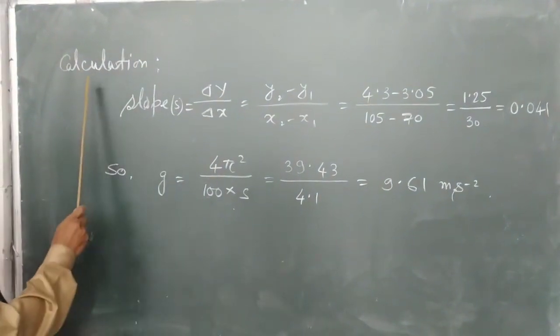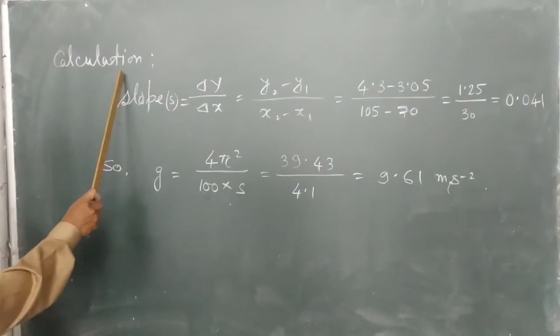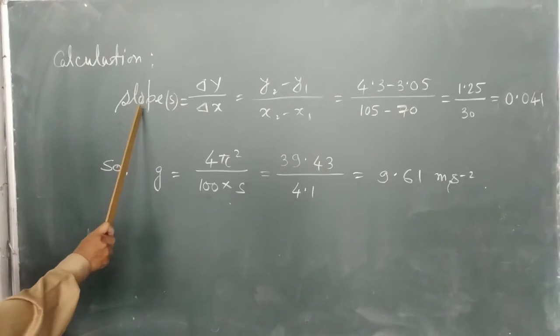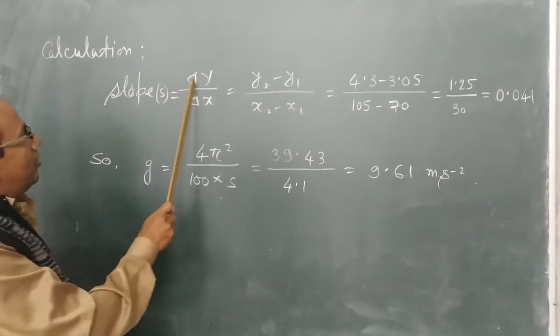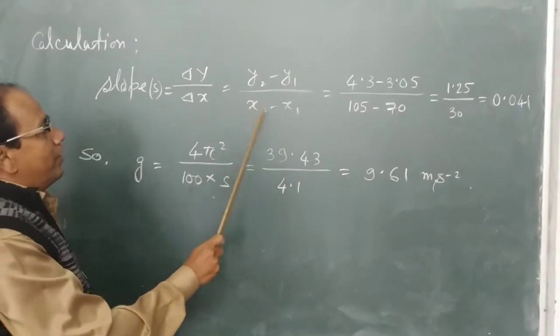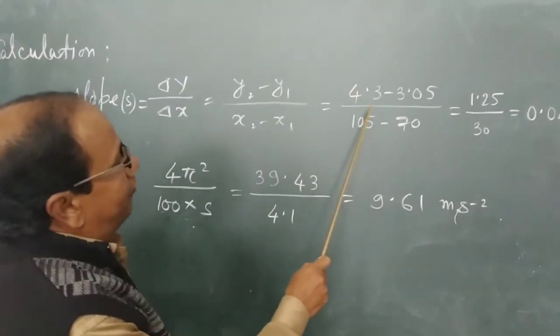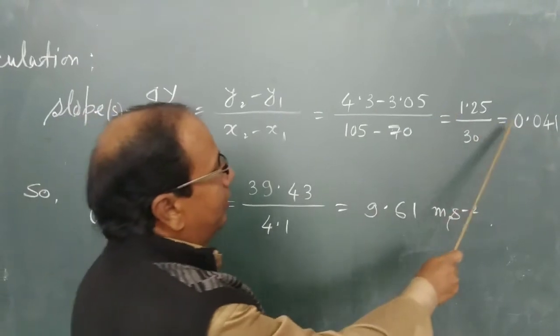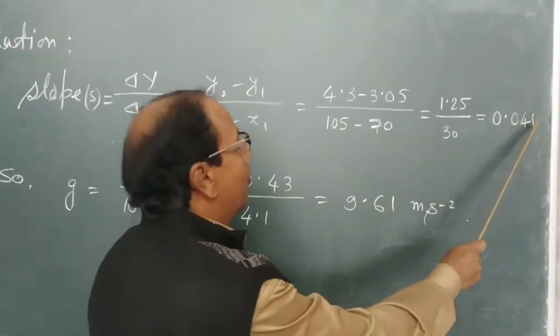Let's go for calculation. For slope we have to use ΔY by ΔX. As I told you before, Y2 minus Y1 upon X2 minus X1. Put the values of all and we got here it is 0.041. Now